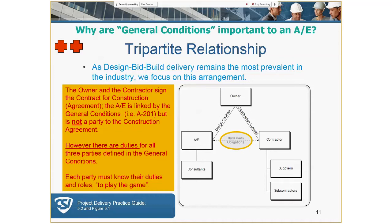We're going to start with the tripartite relationship. The architect and the owner have a contract. It's important to keep in mind that the owner and the contractor have a separate contract, and essentially what the A-201 does is link those two, but they're still two separate documents. That's why it's very important to have coordinated contracts and not to mix and match the contract families — don't use AIA documents with consensus docs or anything else. Use the same family of forms.